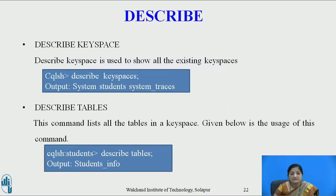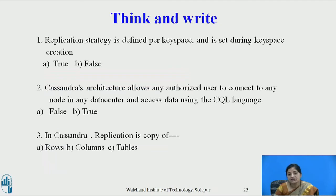Describe keyspace shows all existing keyspaces; here it shows system students and system traces. Describe tables lists all tables in a keyspace; for example, it shows student info as the table on the students keyspace. Now, pause the video and think: replication strategy is defined per keyspace and is set during keyspace creation — is this true or false? Yes, it is true. When we create a keyspace, the replication strategy and replication factor are both defined at that time.